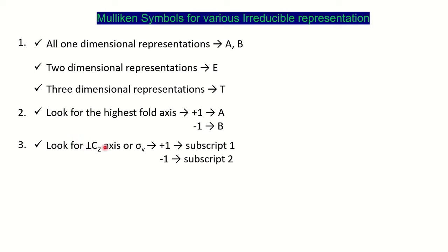The next step is to find in the character table whether you have a perpendicular C2 axis, or subsidiary axis of rotation, or otherwise a vertical plane of symmetry. If both are given, first priority will be given to the subsidiary axis of rotation or perpendicular C2 axis. In the absence of this, we will look for sigma v. If the character for the respective operation is plus one, subscript 1 will be given; if it is minus one, subscript 2 is assigned.